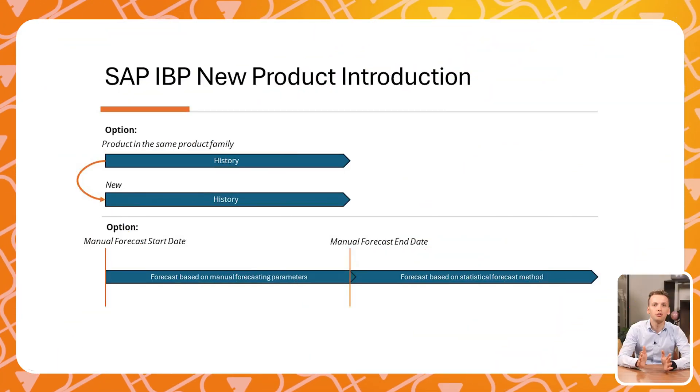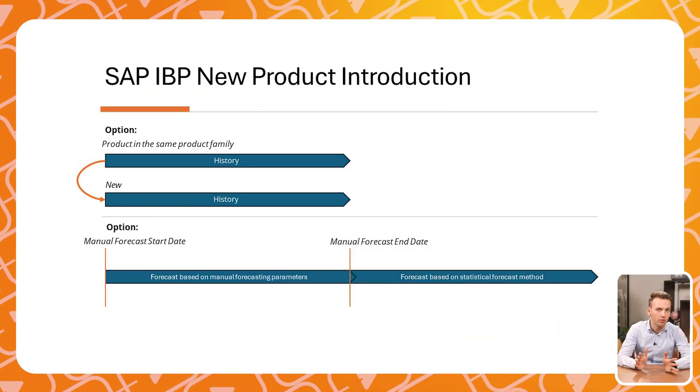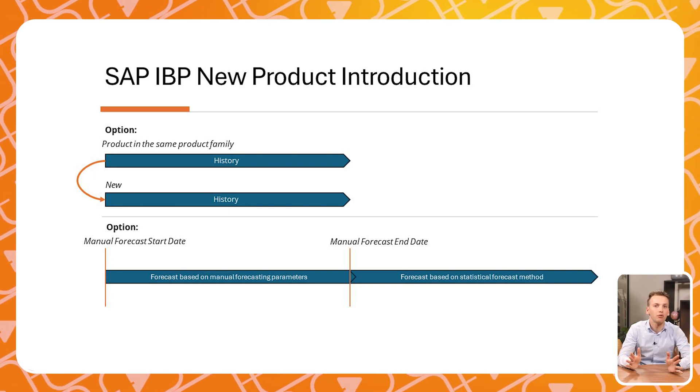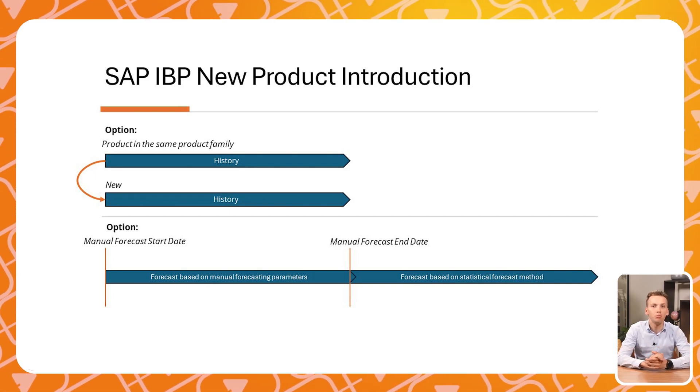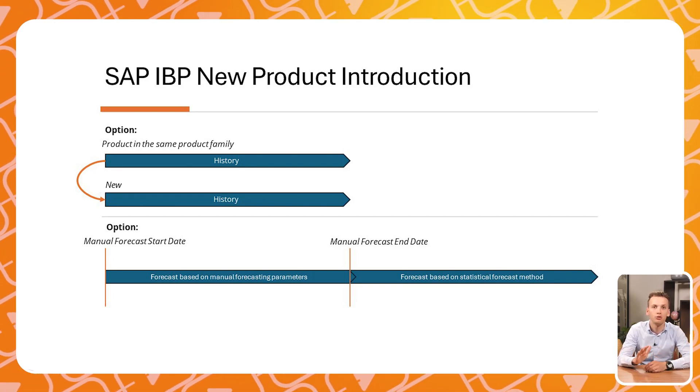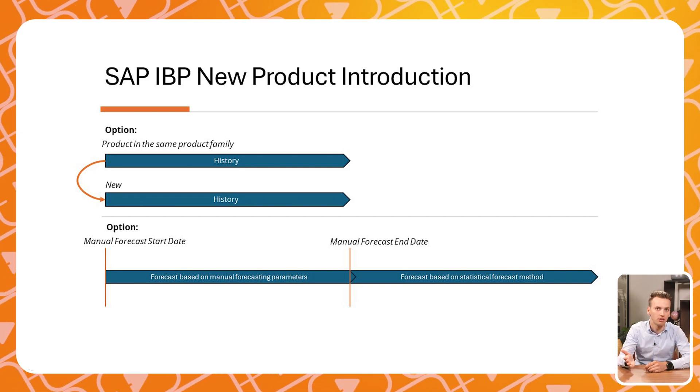But what if you want to use these advanced algorithms for a new product that has no historical data yet? In that case, SAP IBP for Demand offers capability number two: new product introduction via the managed product lifecycle app. The system enables you to, for example, use a reference product that is in the same product family as your new product, which offers you a good starting point for your initial forecast.